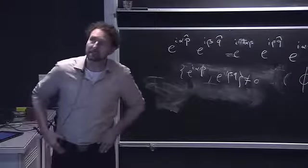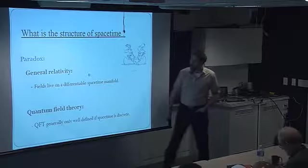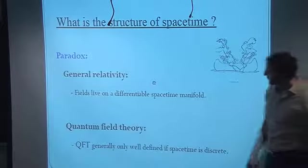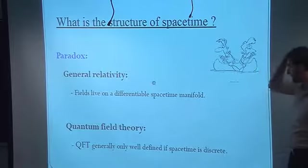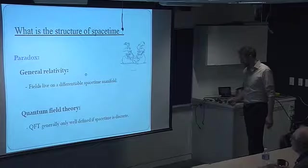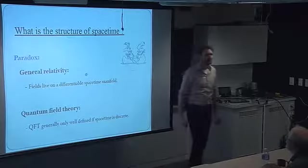Now, what then is the structure of spacetime? There's a paradox. On one hand, general relativity would have it that space is a differentiable manifold. Fields live on a differentiable manifold. On the other hand, quantum field theory doesn't really agree with that, and quantum field theory would be much better defined. In fact, it would be well-defined only if it is defined on a lattice. So how can we reconcile the two? Is general relativity winning, or is quantum field theory ultimately winning?